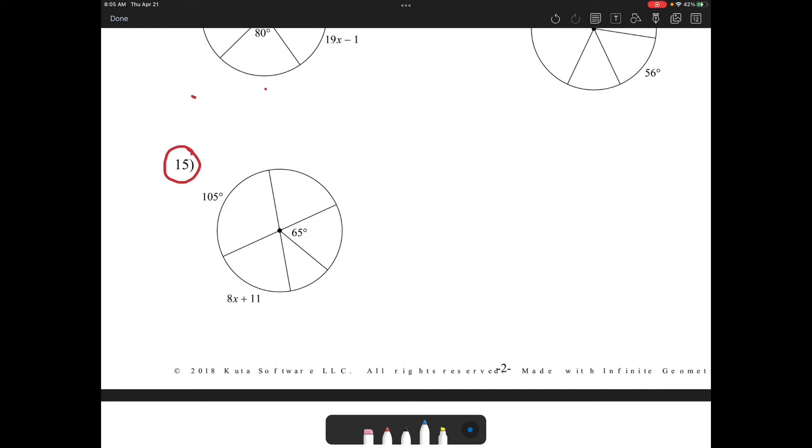For this one, we know that this is a diameter, so because this is a diameter, this measure would be 180. So the measure of 8X plus 11 would be 180 minus 105, which is 75. So then I would have to say that 8X plus 11 is equal to 75, and I'll let you solve that on your own.